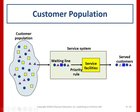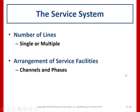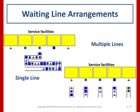The service system also involves the number of lines — which can be single or multiple — and the arrangement of service facilities in terms of channels and phases. There are two waiting line arrangements: single line and multiple line.